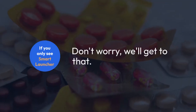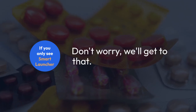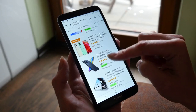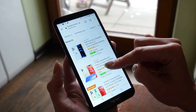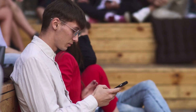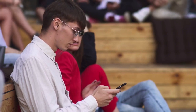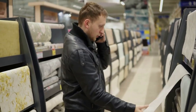You should then see a list of available launchers on your tablet. If you only see Smart Launcher, don't worry — we'll get to that. Select the launcher you want to use instead of Smart Launcher. If you want the standard Android launcher, look for something along the lines of Android Launcher or the name of your phone manufacturer's launcher — for example, Lenovo Launcher. Tap on it to set it as the default.